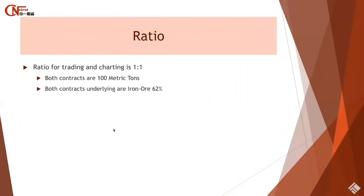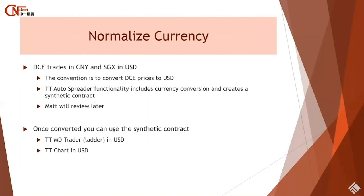In terms of the ratio, trading and charting are both one-to-one, as both contracts are 100 metric tons and both are iron ore at 62%. You do need to normalize the currency — the DCE trades in CNY and the SGX in US dollars. The convention is to convert DCE prices to US dollars. To do that, you use the TT order spreader functionality, which includes currency conversion and creates a synthetic contract normalized and priced in US dollars. Once created, you can use the synthetic contract for trading and analysis with a common denominator — you'll be comparing apples with apples.